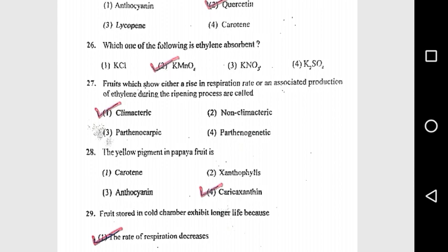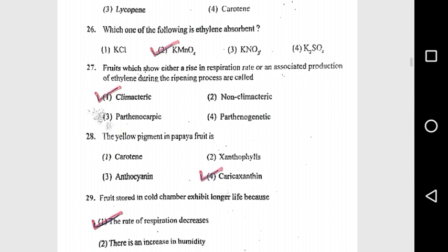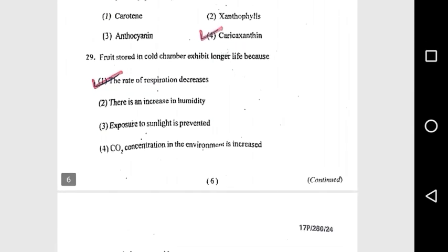Question 26: Which one of the following is an ethylene absorbent? KMnO4 (potassium permanganate). Question 27: Fruits which show a rise in respiration rate or associated production of ethylene during the ripening process are called climacteric fruits. Question 28: The yellow pigment in papaya fruit is carica xanthine.